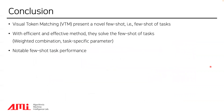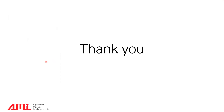In conclusion, Visual Token Matching presents a novel few-shot learning of tasks framework. They propose an efficient and effective method, solving few-shot learning of tasks using weighted combinations and task-specific parameters, and their method shows notable performance. Thank you.